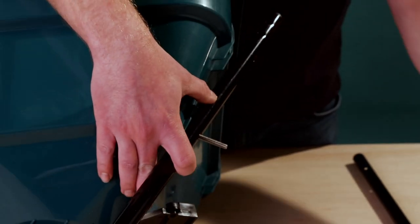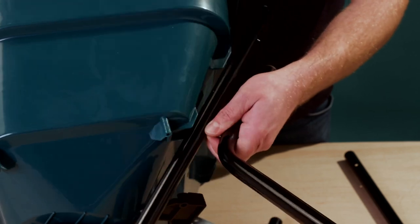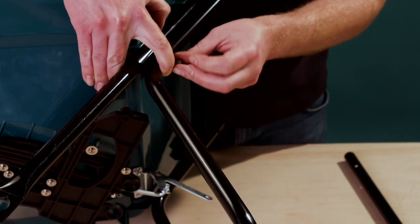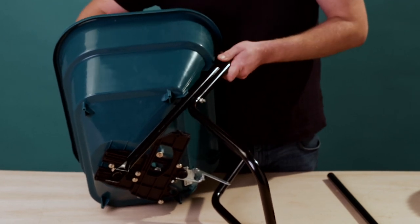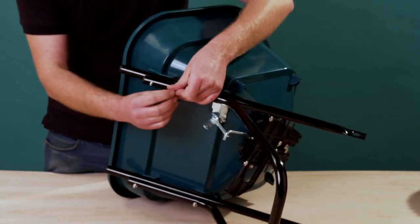Take the two lower frames and attach them to the hopper body using the M6 by 60 bolts. Take the stand and place it into the protruding M6 by 60 bolts. Tighten with the M6 lock nuts.